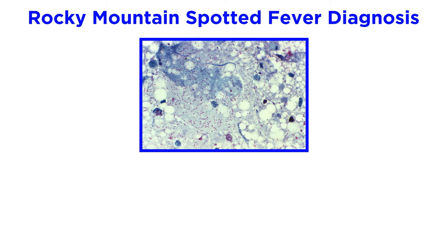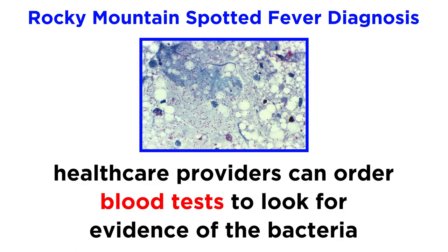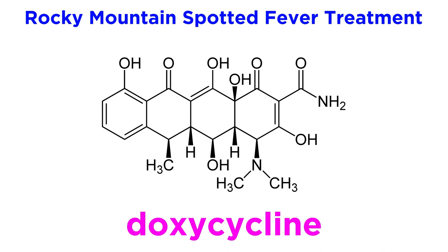Diagnosis is a bit tricky, since the first symptoms you might experience are typically pretty general. However, healthcare providers can order blood tests to look for evidence of the bacteria, especially if you know you've been bitten by a tick. Rocky Mountain spotted fever is usually treated with the antibiotic doxycycline, which is especially effective when the infection is caught early.